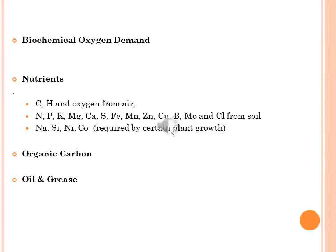There are at least 16 essential chemical nutrients required for plant growth to perform various physiological functions. These nutrients include carbon, hydrogen, and oxygen from air, as well as nitrogen, phosphorus, potassium, magnesium, calcium, iron, manganese, zinc, copper, boron, molybdenum and chlorine from soil.